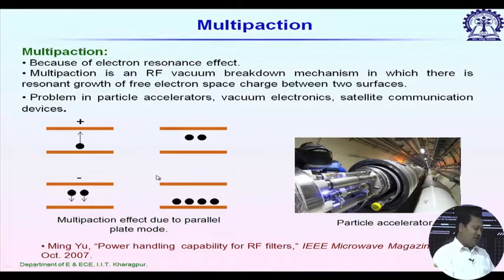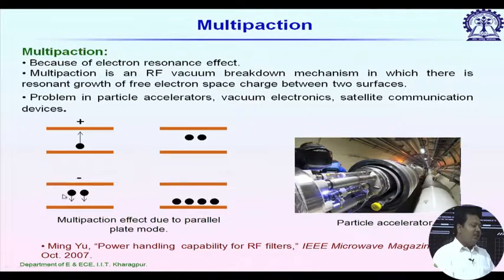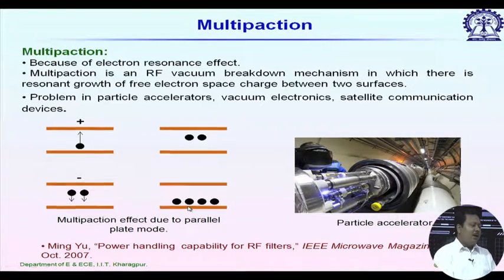To achieve this, we need an exact phase relationship. When this electron just reaches the first plane, exactly at that instant the field should change phase between the two plates — otherwise electrons won't be accelerated toward the bottom plane. That is why we call it a resonance phenomenon. Without this phase relationship it won't happen. As a result, we suddenly have many electrons exchanging energy between the two planes, and we have an effect of breakdown.